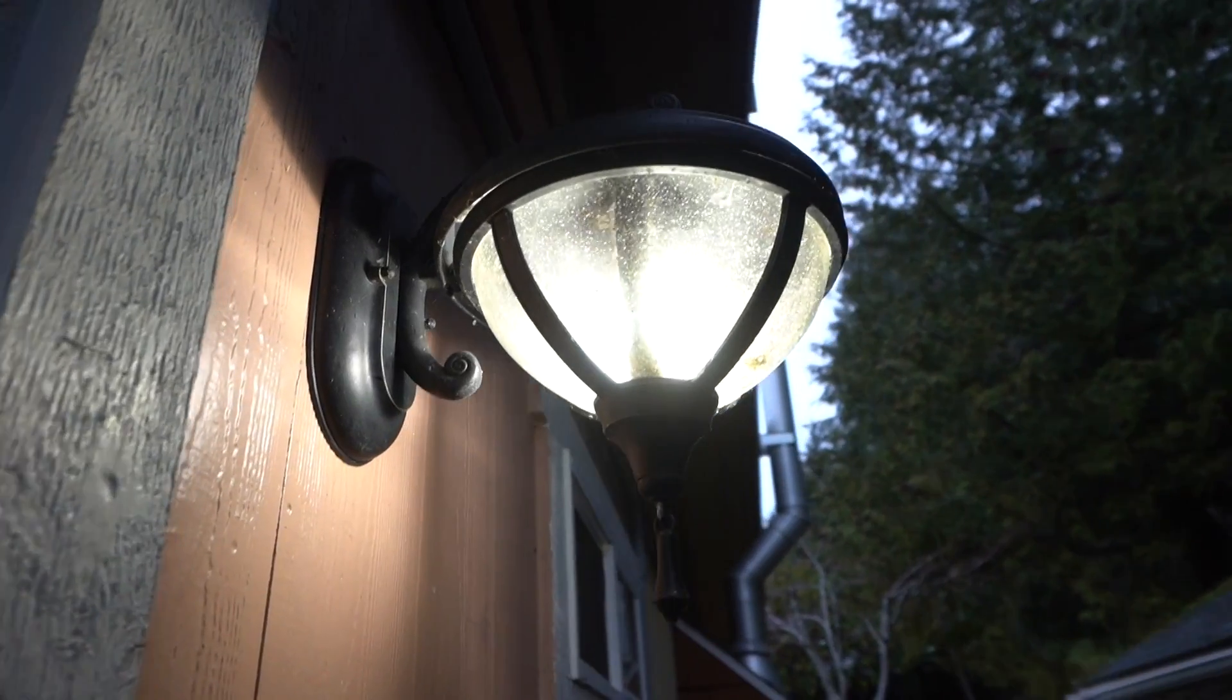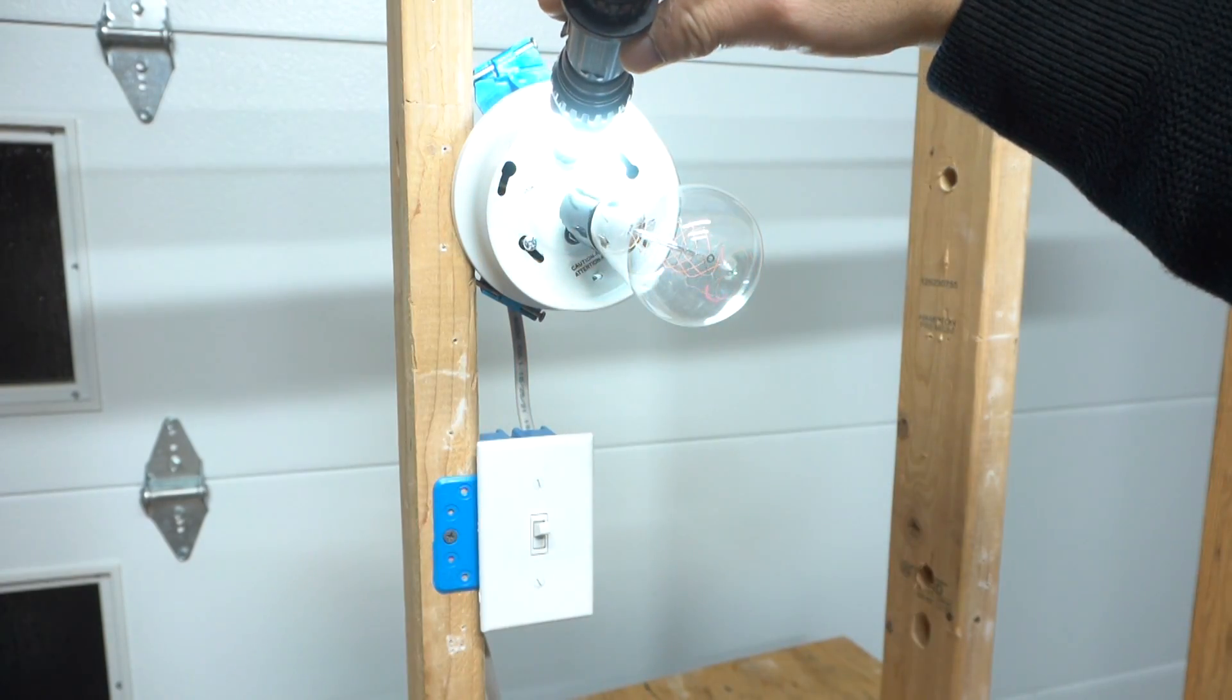On today's episode, I'm going to be showing you how you can make your outside lights turn on when it starts getting darker outside and turn off when the sun starts coming up so you can save electricity and save money on your electrical bill. So make sure you stay tuned.